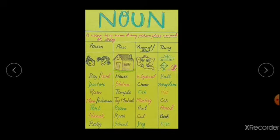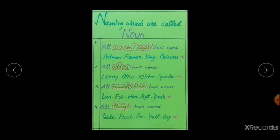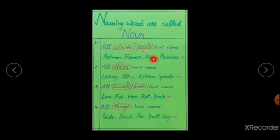I am going to make you understand with another activity. There is a one-line, very easy definition of noun: naming words are called noun. Means every word, everything which has a name, it is a noun. All persons and people have names, like postman, farmer, king, princess, etc. Every person and people will come in the section of person.